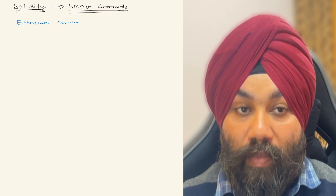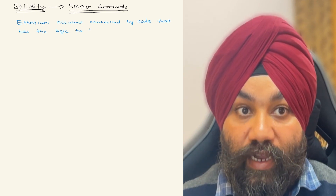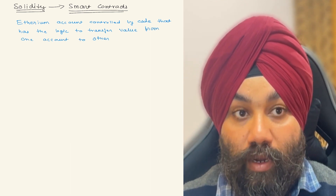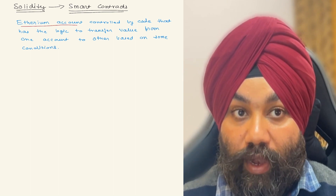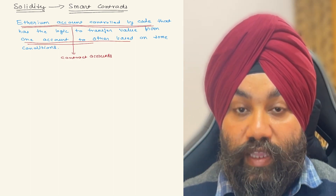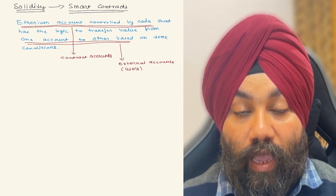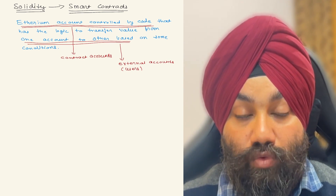A smart contract is basically an Ethereum account controlled by code that has the logic to transfer value from one account to another based on some condition implemented in the smart contract. The Ethereum account controlled by code is called the contract account, and the accounts between which the value is transferred are called external accounts or user accounts.